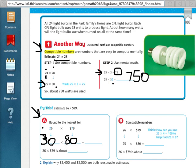I'm going to do my basic fact 3 times 8 which is 24 and add my two zeros on to my answer to get 2,400. So 26 times 79 dollars is about 2,400 dollars. So that's the first way.